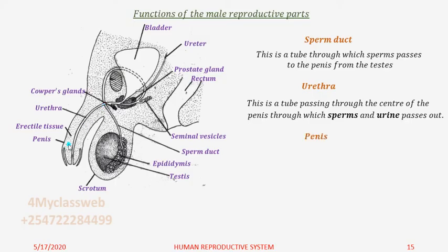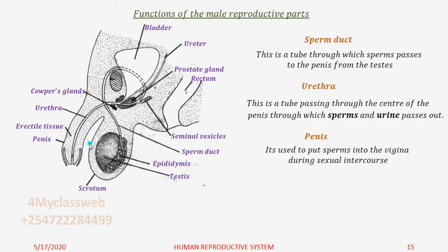Let us look at the penis. This one is used to introduce or put sperms into the vagina during sexual intercourse. We have the erectile tissues, which help the penis to become erect in readiness to penetrate into the vagina. Those are the main parts and functions of the male reproductive system.